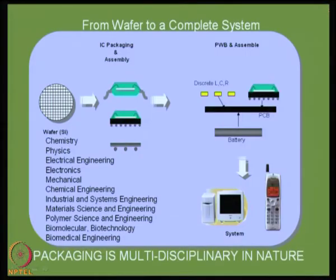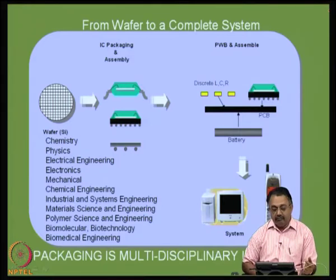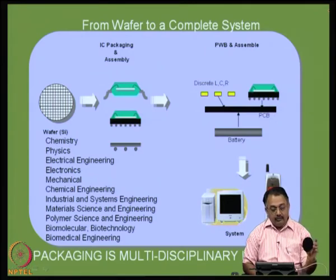You can be a mechanical engineer, a chemical engineer, a chemist, a physicist, a material scientist, a polymer engineer, or in bioengineering — all of these areas can contribute to packaging. If you look at this slide, I have depicted how the process goes from a wafer to a complete system. On the left side, you see a wafer — I am showing you here a sample of a silicon wafer. This is the starting material of all electronics built up today for any product. Only the size and performance levels vary.